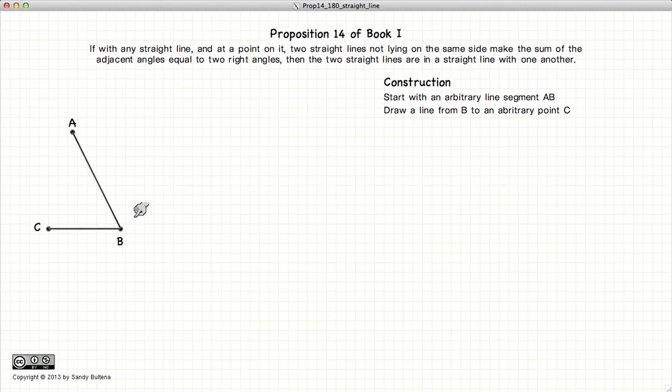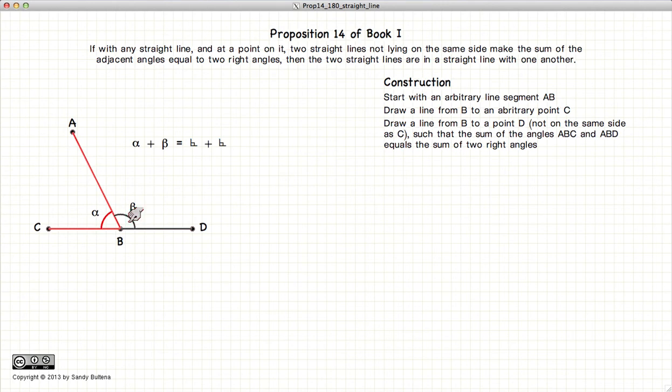Next, we will construct a line BD such that the angles alpha plus beta sum up to 180 degrees.